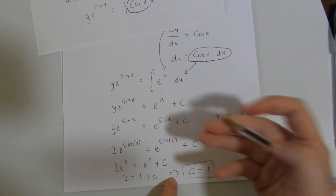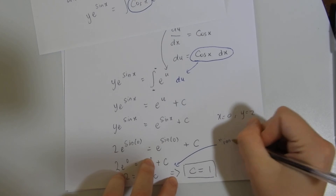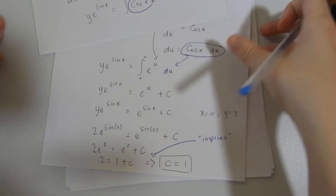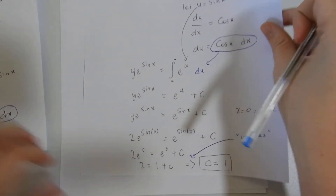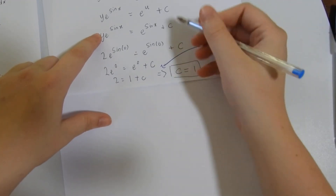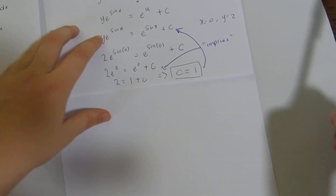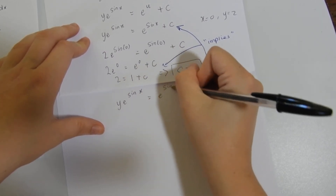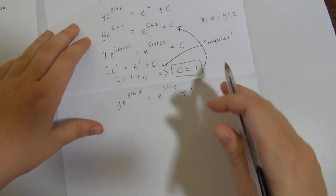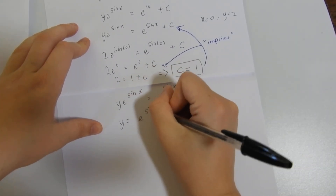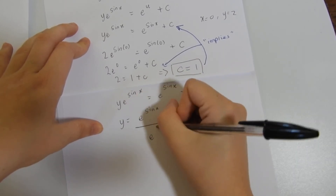Moving the 1 over to the left-hand side, we can see that c = 1. That arrow is an implies symbol — so 2 = 1 + c implies c = 1. That's a common math symbol you may come across. Now that we've got c = 1, we substitute it back into the equation, giving y·e^(sin x) = e^(sin x) + 1.